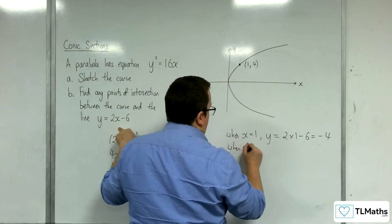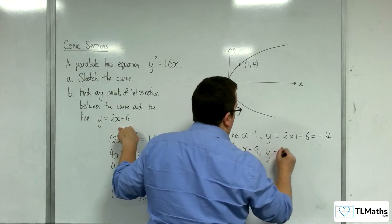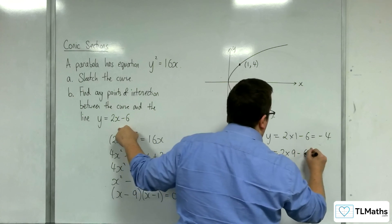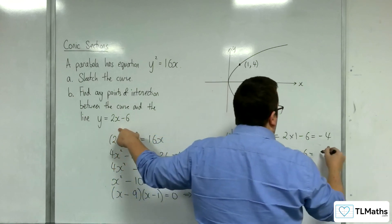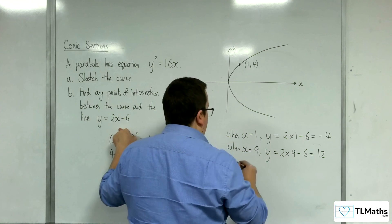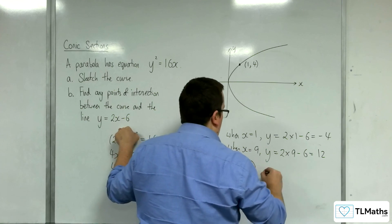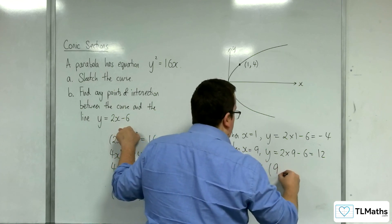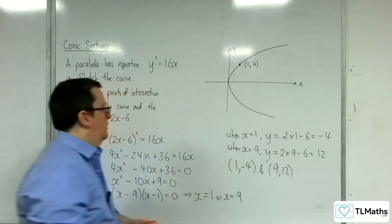And when x is equal to 9, y is equal to 2 times 9 take away 6, which is 18 take away 6, which is 12. So the points of intersection are 1 minus 4 and 9, 12. Okay.